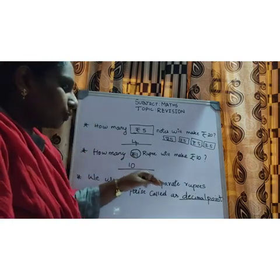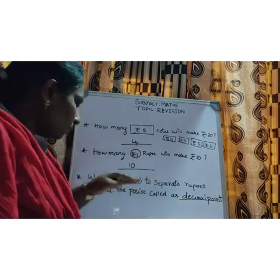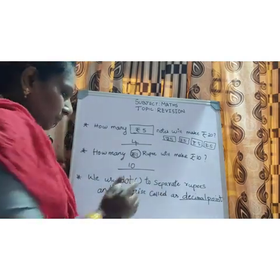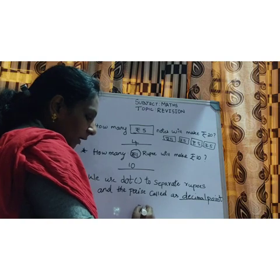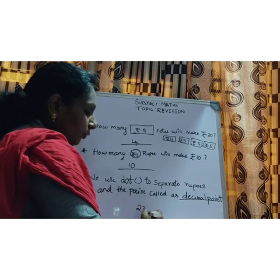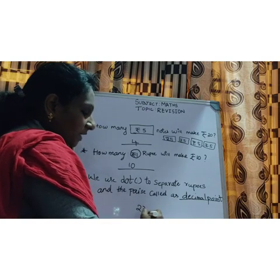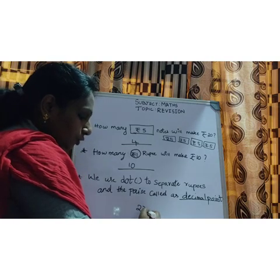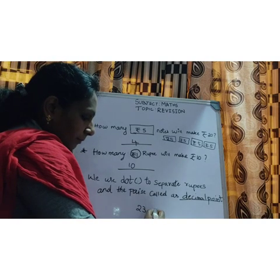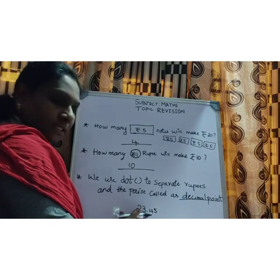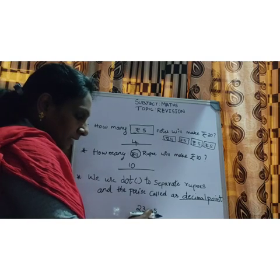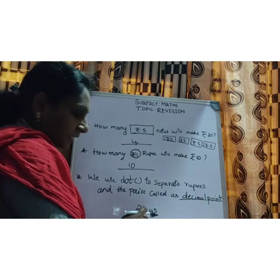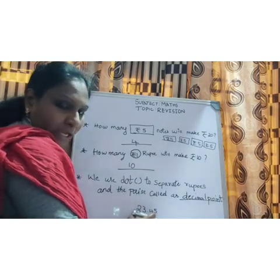Here we use a dot to separate rupees and paise, called the decimal point. For example, if you have 23 rupees and 45 paise, you should write it as 23.45. So the dot separates rupees and paise — before the dot is rupees and after the dot is paise.